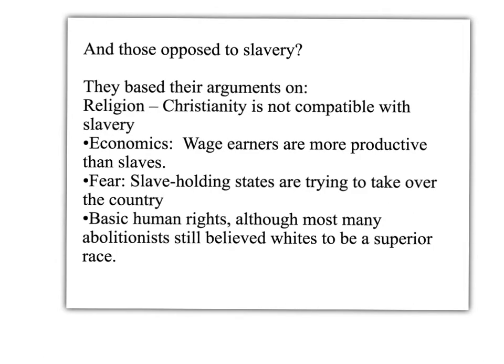Abolitionists — those who opposed slavery — based their arguments on similar areas. Religion: they said Christianity is simply not compatible with slavery, and they argued using the Bible as well. Economics: they felt that wage earners were more productive than slaves. Many raised the specter of a slaveholding state conspiracy, feeling that slaveholding states were trying to take over the country and had to be stopped. Others cited basic human rights: life, liberty, and the pursuit of happiness should be extended to those of African descent as well as European descent. But I have to stress that many abolitionists still believed whites were a superior race to those from Africa and other countries.